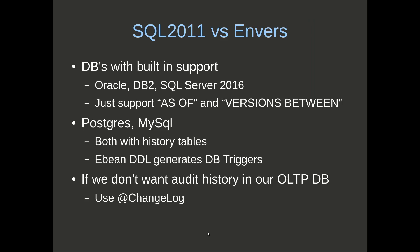In terms of the differences: with databases that have SQL 2011 support built in, like Oracle, DB2, and SQL Server, eBean just needs to support the as-of and versions-between syntax, so it doesn't need to do anything else really. With databases that don't have SQL 2011 support built in, we can simulate that in eBean by generating the database triggers. Both eBean and EnVers in this case will have history tables. The difference really is that it's a database-centric approach with eBean to bring it in line with SQL 2011.